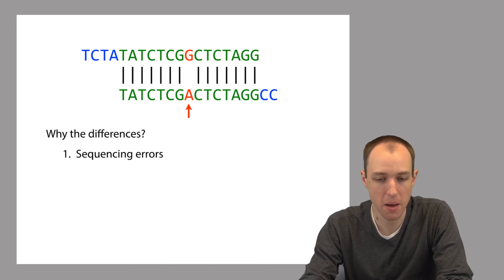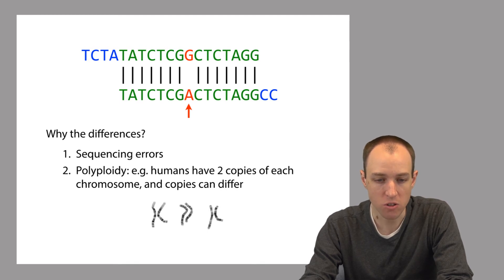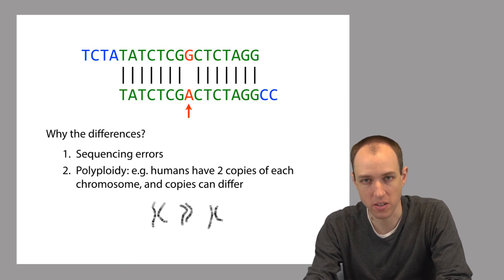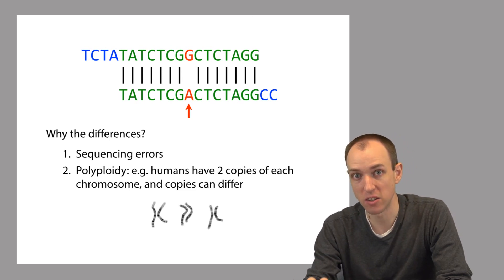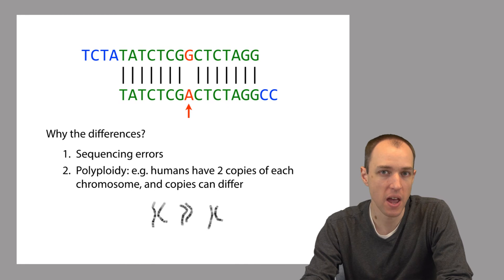The second reason this might happen is due to something called polyploidy. Humans, for example, have two copies of every chromosome. Every person has two copies of each of their DNA molecules, and one copy is inherited from the mother and one copy is inherited from the father. And these two copies are not exactly the same. So this can also lead to a situation where there's an overlap between two reads. There's a suffix of one read that matches a prefix of the other, but they have a difference. And in this case, the difference is real. It's not a sequencing error. It's just because the two different copies of the genome had different bases at that position.